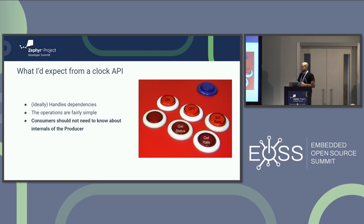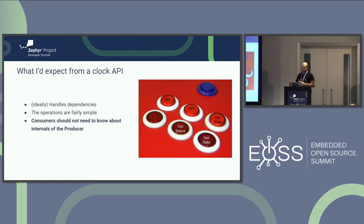Ultimately a clock API should be very simple — it really doesn't need a lot of different operations. I'm going to skip over the dependency stuff because that gets complicated quickly. I'm going to focus on the simple operations: on, off, set rate, get status, get rate — the things a consumer driver cares about. Turn on the clock, turn it off, are you running, what's your status, do you have an error, and what's the clock frequency?